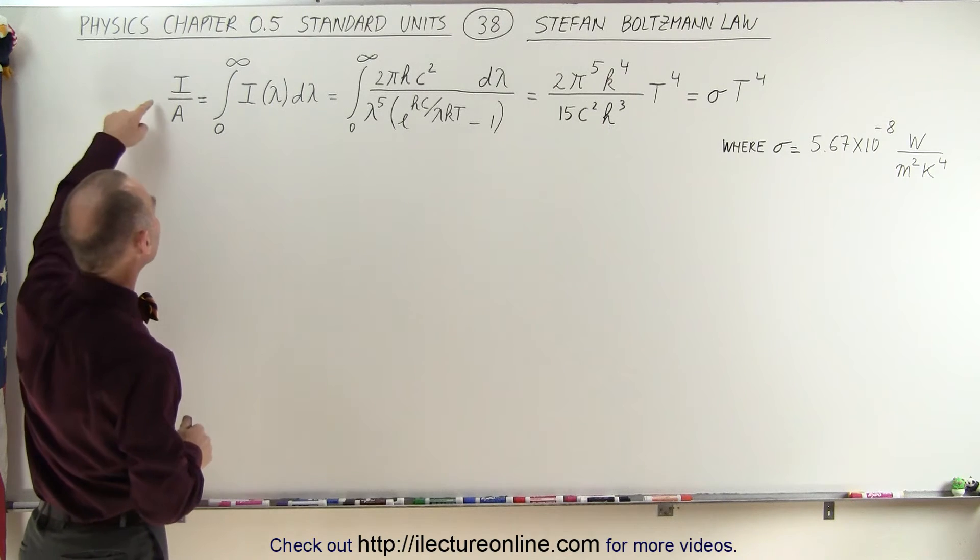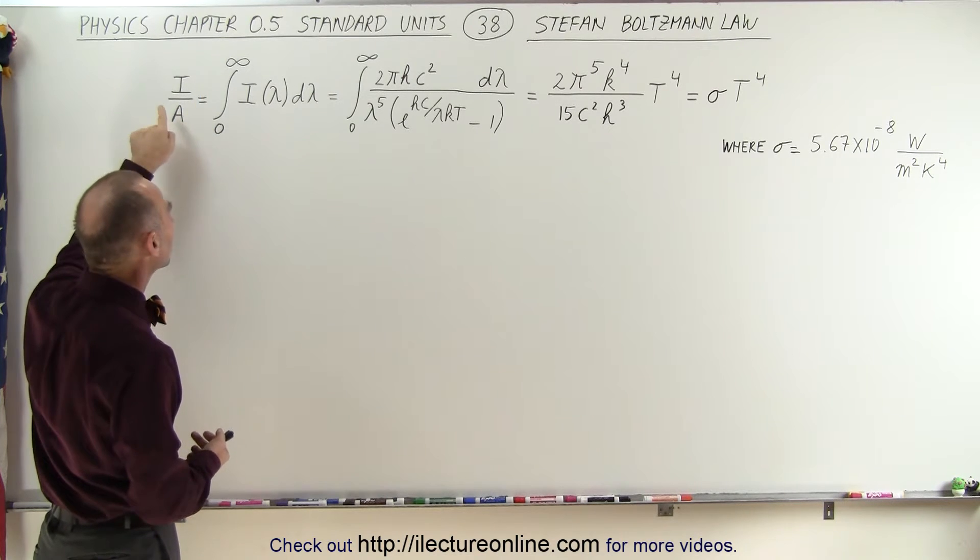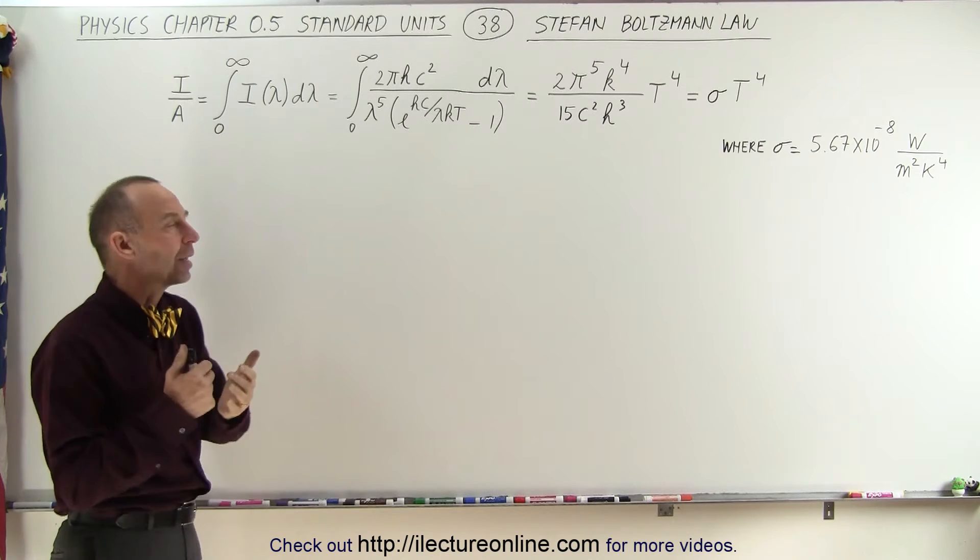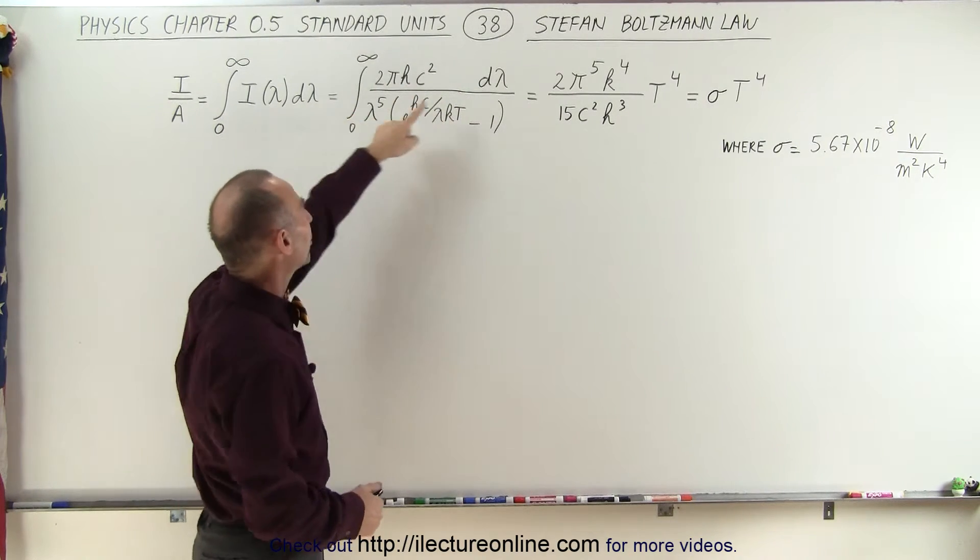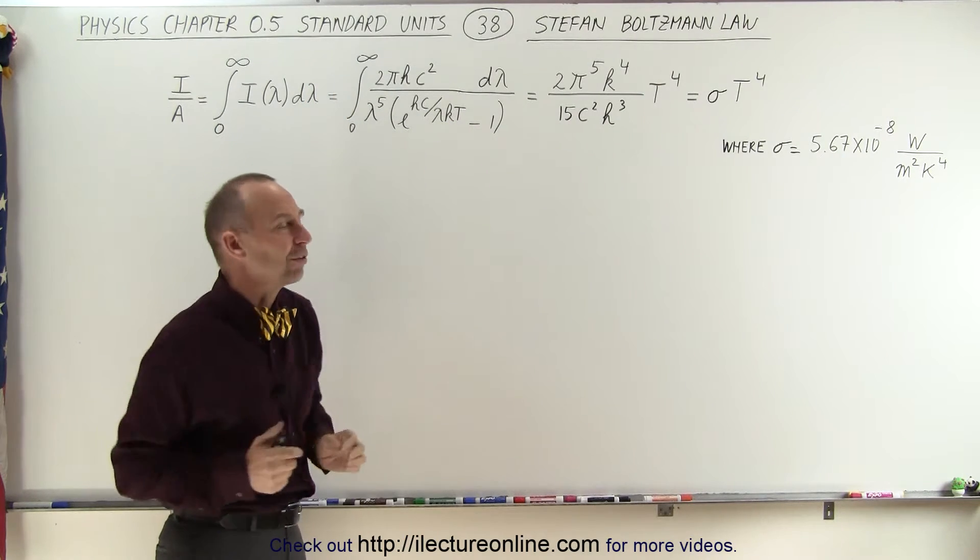The way that was done is by starting out by saying that the intensity per unit area can be defined as the integral of that Planck equation, that black-body radiation curve which we saw in the previous video. If we integrate over all of the wavelengths, we should get the total radiation of a body.